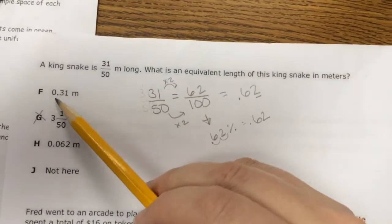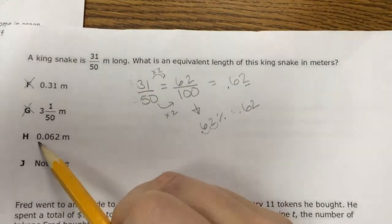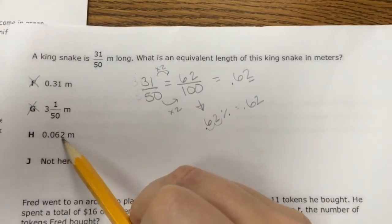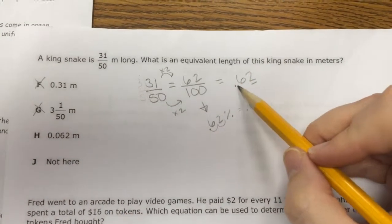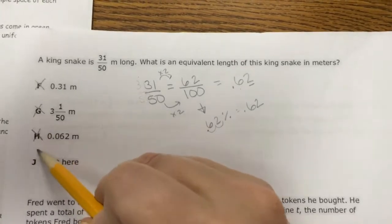Let's look at my other answer options. 0.31, well that's not what I got. That's not it. This one says 0.062. Well, my decimal is right in front of the 6. This one has a 0. So it's not that one either.